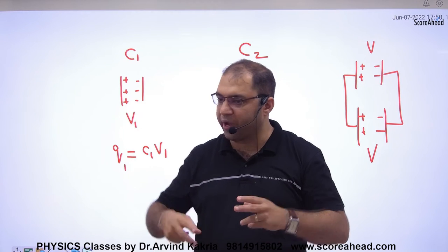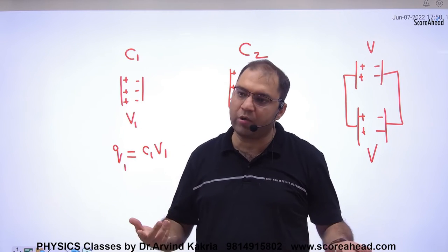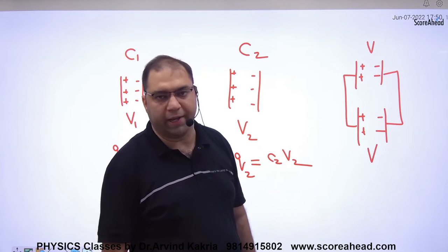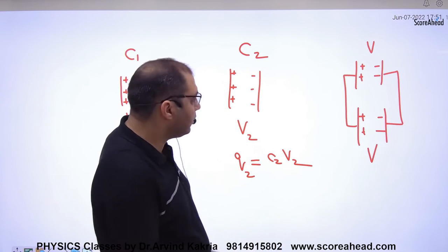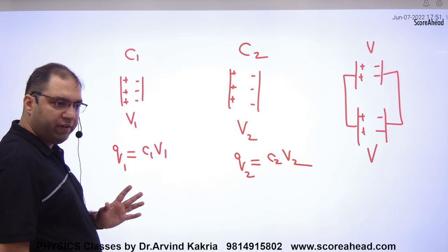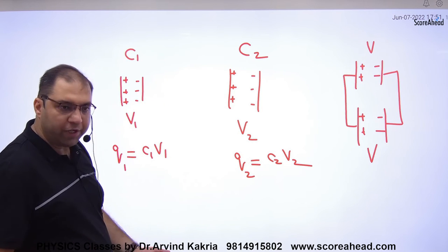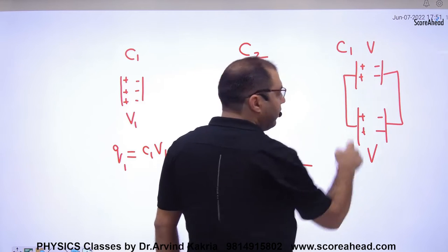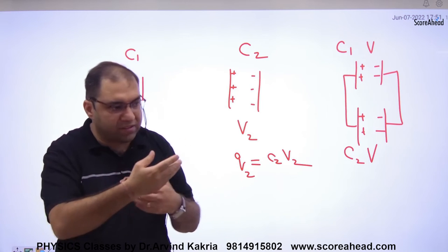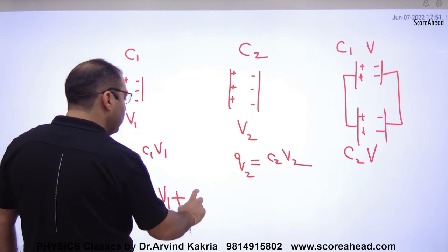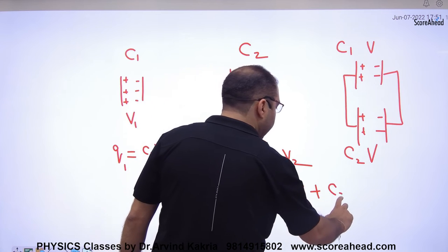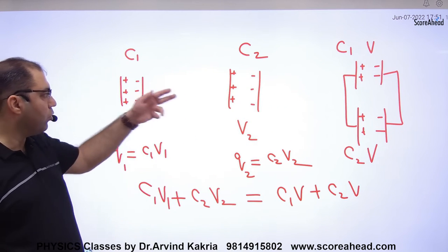When V1 and V2 are joined, both become V and V, because potential moves from higher to lower potential to reach common potential. The charge value on the first capacitor before sharing was C1·V1, and on the second was C2·V2. So the total charge of both capacitors combined remains the same.